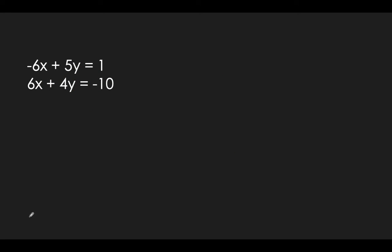Let's do another one. Our goal is to add our equations, but we've got to make sure first that a variable would eliminate itself. If you look here, they would eliminate. So let's add our functions. Negative 6x plus 6x — they cancel out. You get 5y plus 4y, which is 9y. And 1 plus negative 10 — same as 1 minus 10 — so you get negative 9. We've got to solve for y, so divide by 9. y equals negative 1.